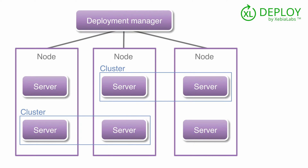Everything that you define in Excel Deploy, from applications to infrastructure, is a configuration item. A configuration item's type determines the properties that you can set for it and the way that Excel Deploy will deploy it. So, you define your deployment manager as a waz.deploymentManager configuration item type. The configuration item contains properties of the deployment manager, such as the directory where it is installed. It also contains the credentials needed to access the WebSphere command line interface.